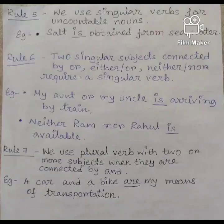Rule number 5: we use singular verbs for uncountable nouns. Example: salt is obtained from seawater. We know that salt is an uncountable noun, that's why here we have used a singular verb.